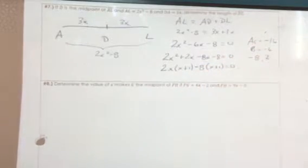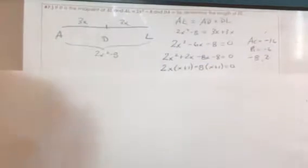And again, we're left with x plus 1. So that means we have 2x minus 8 times x plus 1 equals 0.